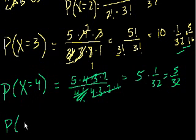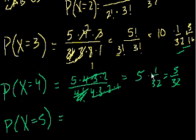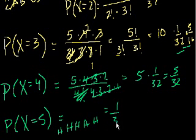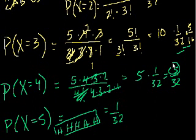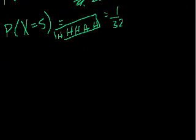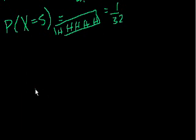Finally, the probability that X equals 5 — all five heads — is heads, heads, heads, heads, heads, each with a 1/2 probability multiplied together, giving 1 out of 32. Out of 32 equally likely scenarios, this is just one. Now we've done the work and we're ready to draw the probability distribution. I'm running out of time, so I'll continue in the next video. Maybe draw it yourself before watching the next one!